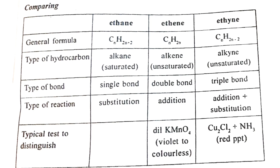Alkenes have a double bond. When alkenes are added to a bromine water solution (1% bromine solution), they decolorize it. Alkanes with only single bonds do not decolorize the bromine water solution — no reaction occurs.